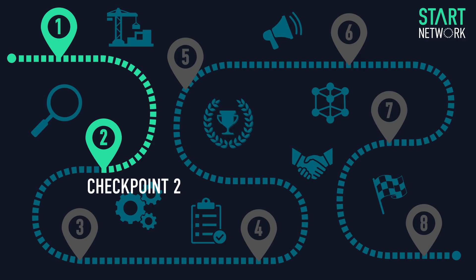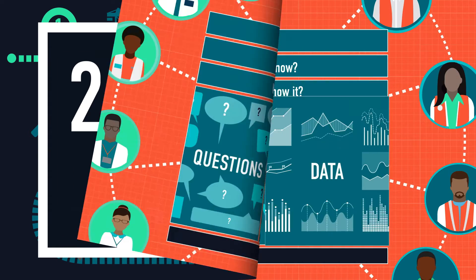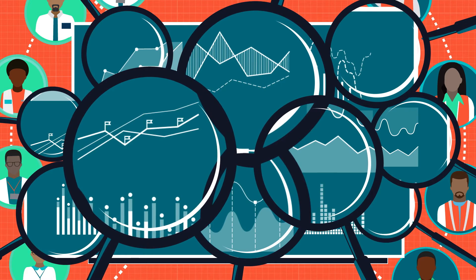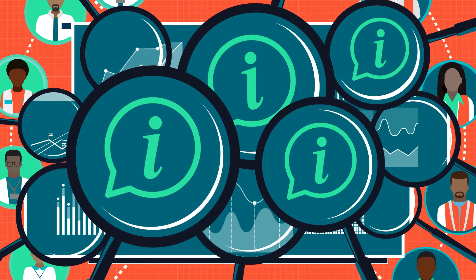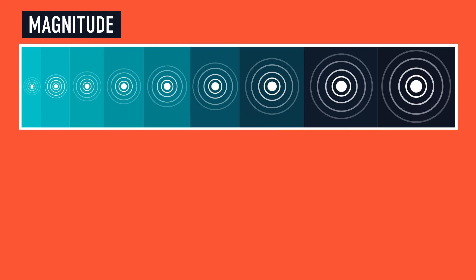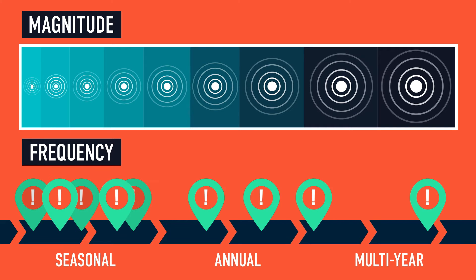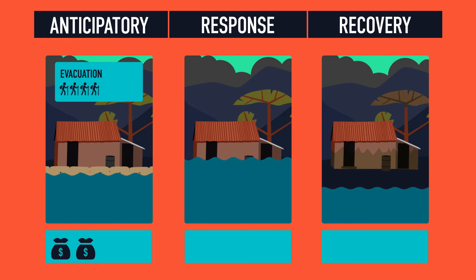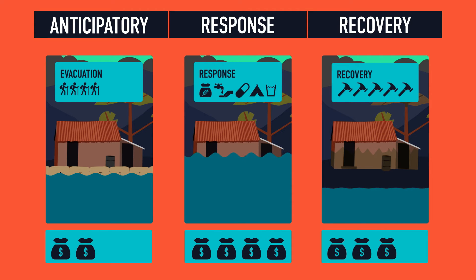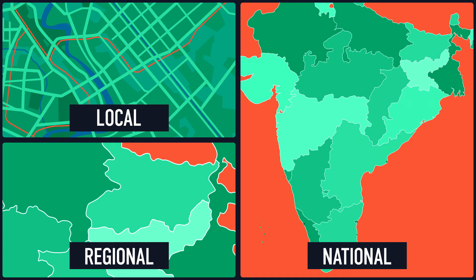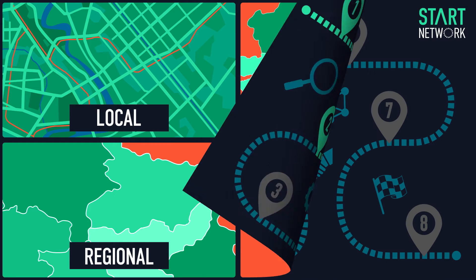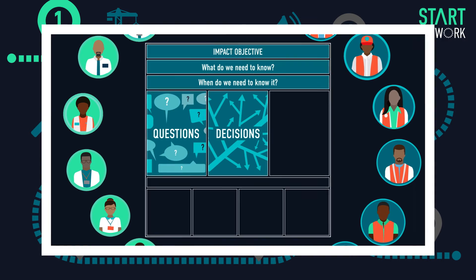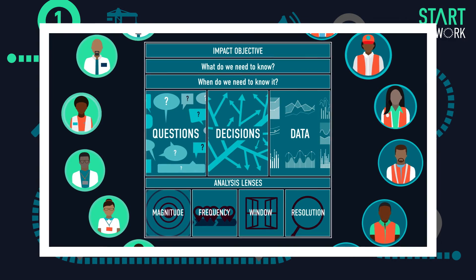Checkpoint 2: define the analysis lenses. It won't be practical to test the system from all possible angles, so the most informative variables should be identified. For example: what magnitude and frequency of events are we considering? What should the intervention timing or window be — anticipation, response or recovery? What geographical resolution works best? Once checkpoints 1 and 2 are complete, a clear due diligence framework will have been prepared between the users and providers.